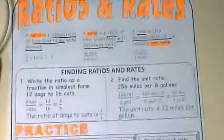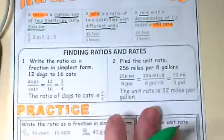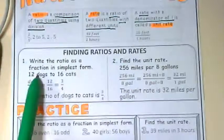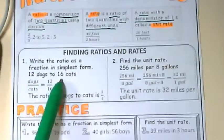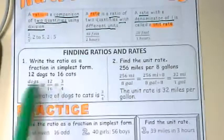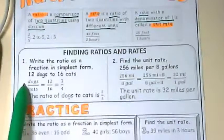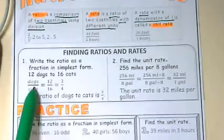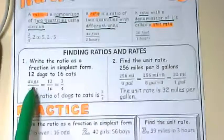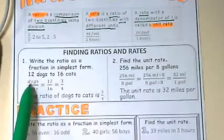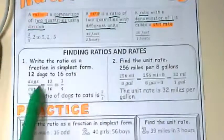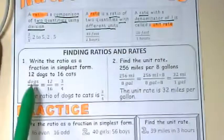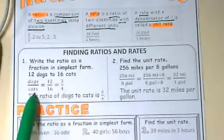So now we're going to move down to finding ratios and rates. The direction here says: write the ratio as a fraction in simplest form. Twelve dogs to sixteen cats. What do you see here first? We see a ratio with the words in it. I like to refer to this as a ratio map. It tells us that whatever happens as we're doing these comparisons, the number on the top is going to be dogs and the number on the bottom is going to be cats.